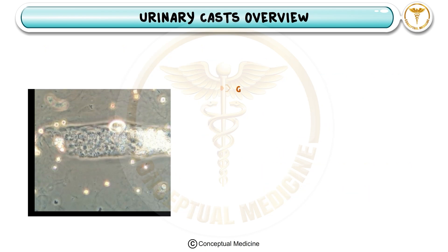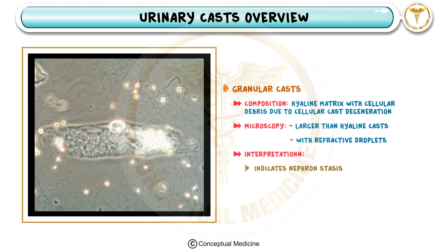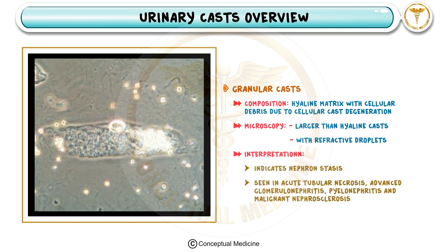Next we have granular casts, which are hyaline casts containing cellular debris from degenerated cells. Under the microscope these appear larger and have refractive droplets. Granular casts indicate nephron stasis where kidney tubules are not functioning properly. They are commonly seen in conditions like acute tubular necrosis, advanced glomerulonephritis, pyelonephritis, and malignant nephrosclerosis, suggesting more severe tubular injury compared to hyaline casts.